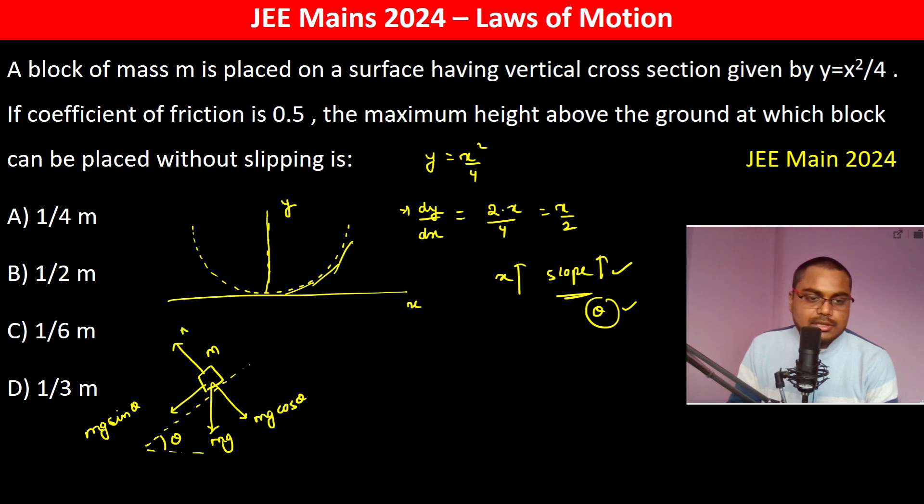And this is n. So n becomes equal to mg cos theta.